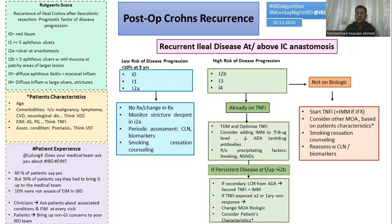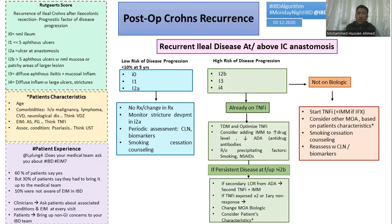If the patient is not already on biologics, we have to start TNF inhibitors — meaning infliximab or adalimumab — and also add an immunomodulator such as azathioprine to prevent or decrease antibody levels in the blood. Smoking cessation is also essential. We also have to re-evaluate and reassess the patient regularly using biomarkers and colonoscopy for lesions as described in the Rutgeerts scoring system. Many thanks and goodbye.